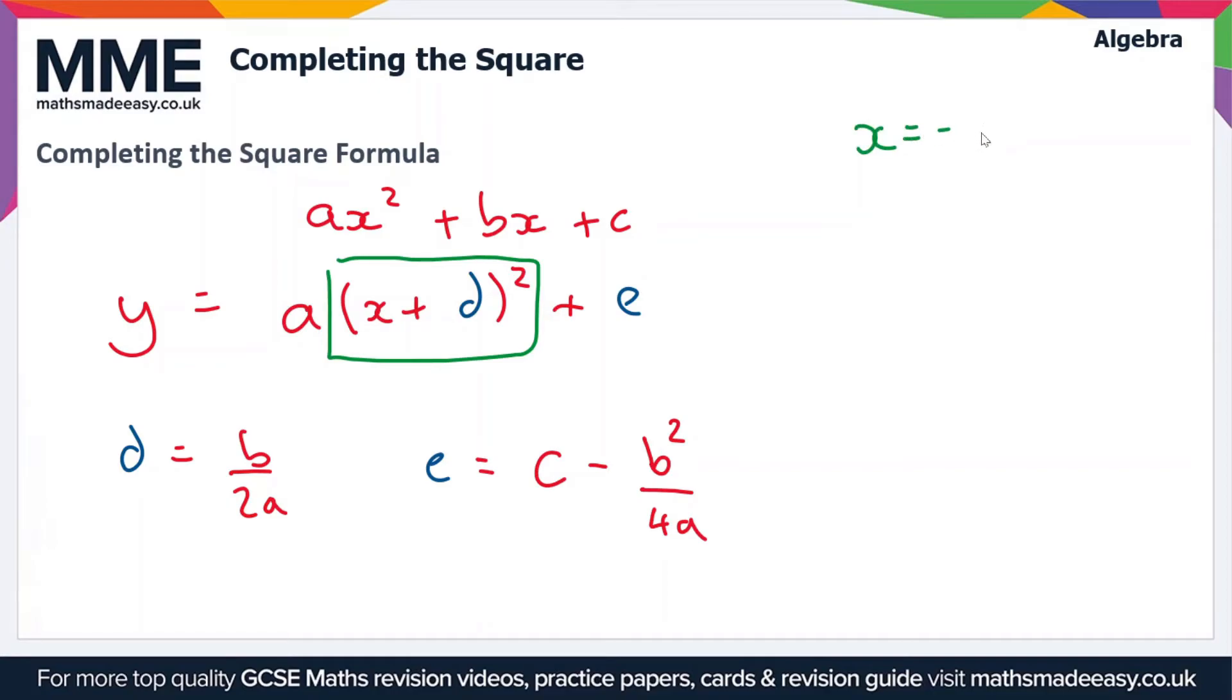So when we have x equal to -d, a(x + d)² just becomes 0, and then we're left with y = e. And now these are our turning points of the quadratic.